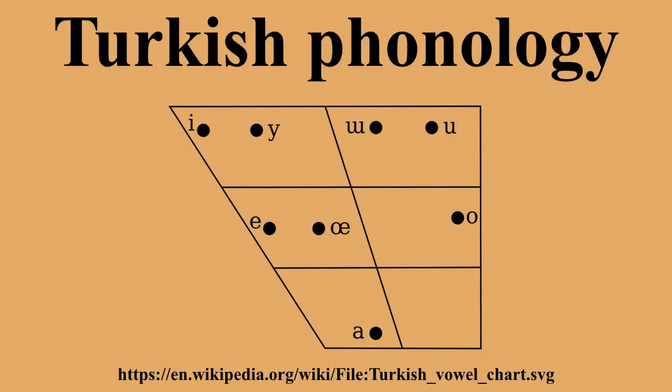B, D, D, J are devoiced word-finally and morpheme-finally, as well as before a consonant. When a vowel is added to nouns ending with post-vocalic K, it is lenited to G. This is also reflected in the orthography.